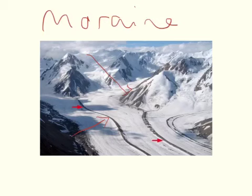When you've got a mountain in between and the two glaciers meet, the two lateral moraines will then combine to create this medial moraine that you have here, running down the middle.